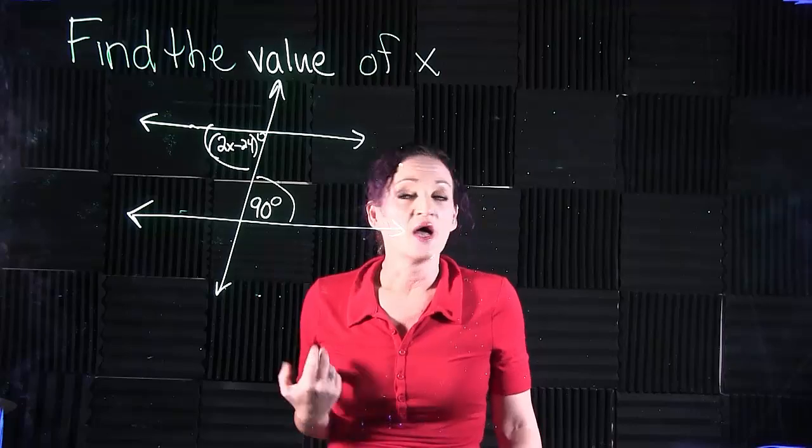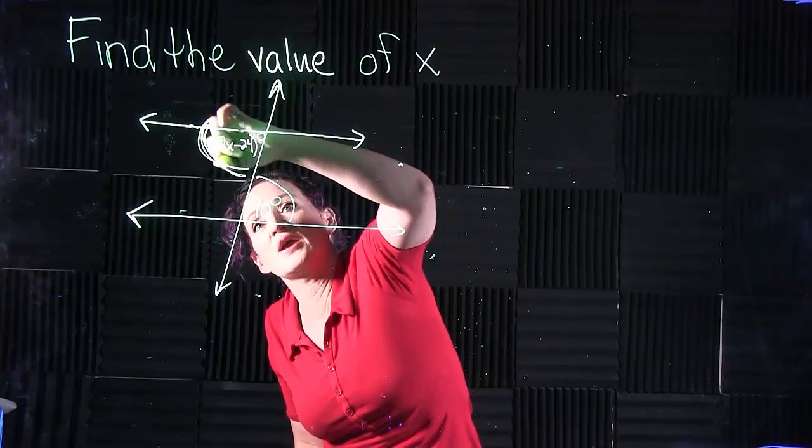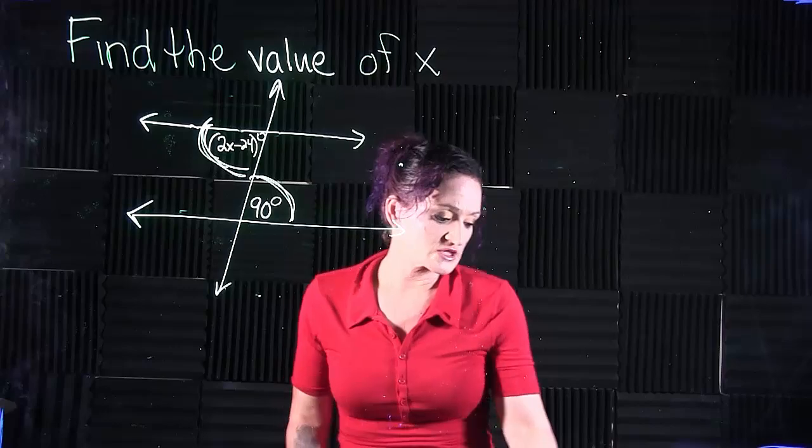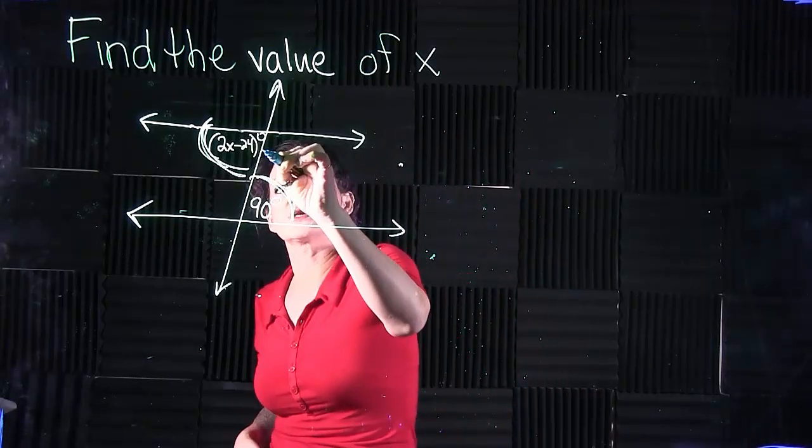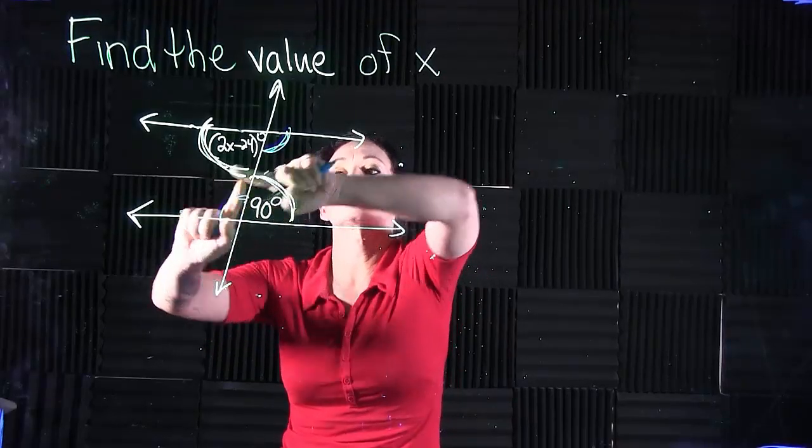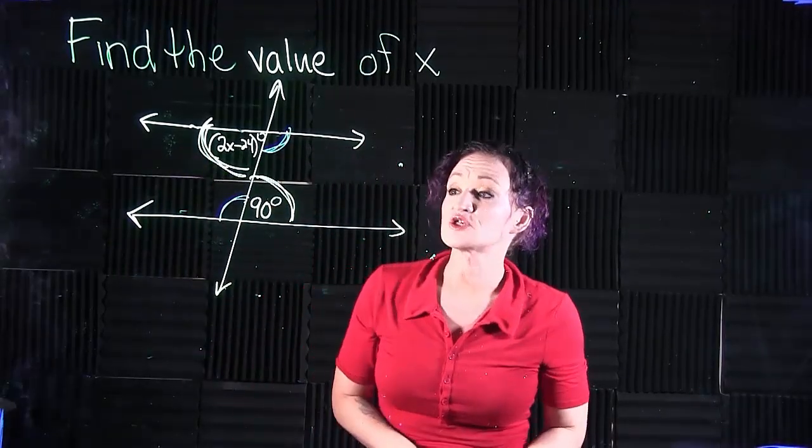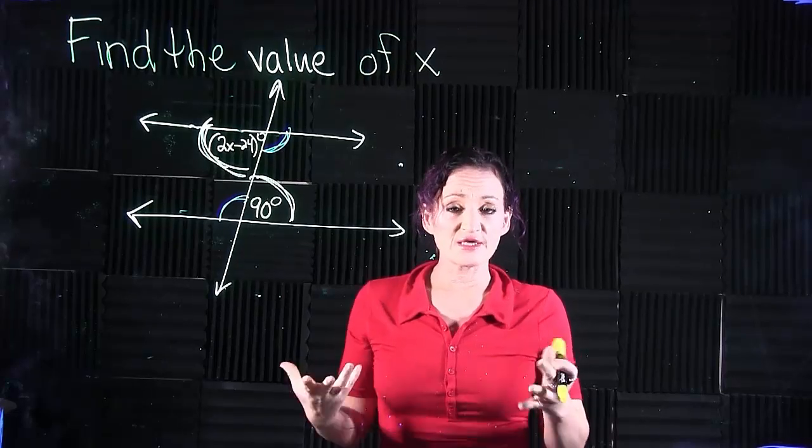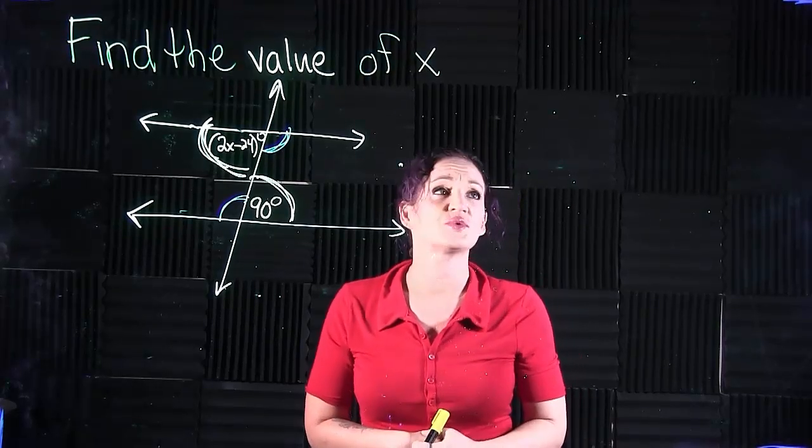equal to each other because they're alternate interior angles. This angle equals this angle. In a similar situation, this angle over here would equal this angle over here because they're also alternate interior angles. We just need to set these equal to each other and solve the equation.